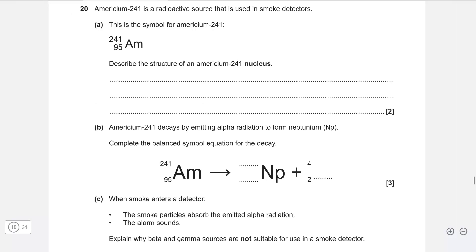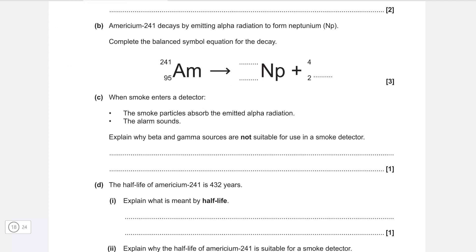We have Americium 241, which is a radioactive source sometimes used in smoke detectors, and we're given the symbol. Describe the structure. Remember this here is our proton number, and this here is the number of protons plus neutrons. Following from that, we can simply write that the nucleus has 95 protons and it has 241 take away 95, 146 neutrons.